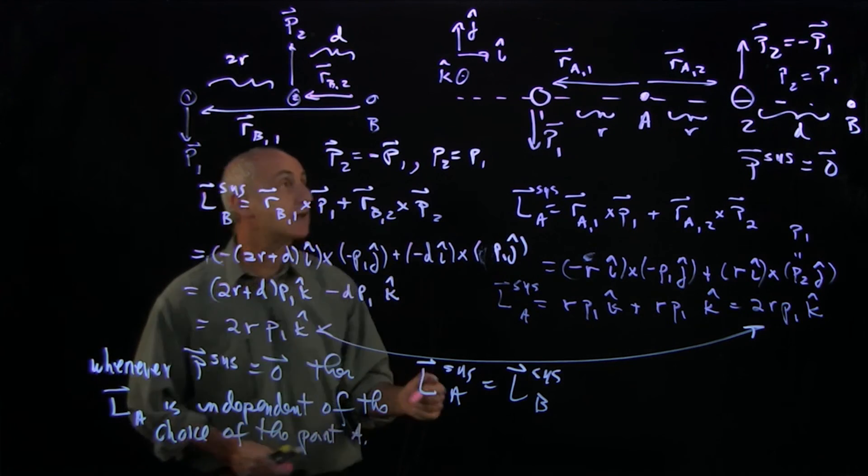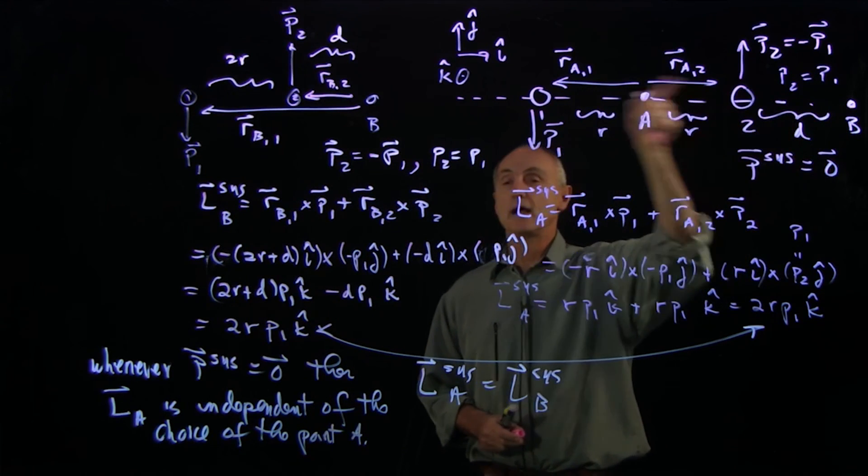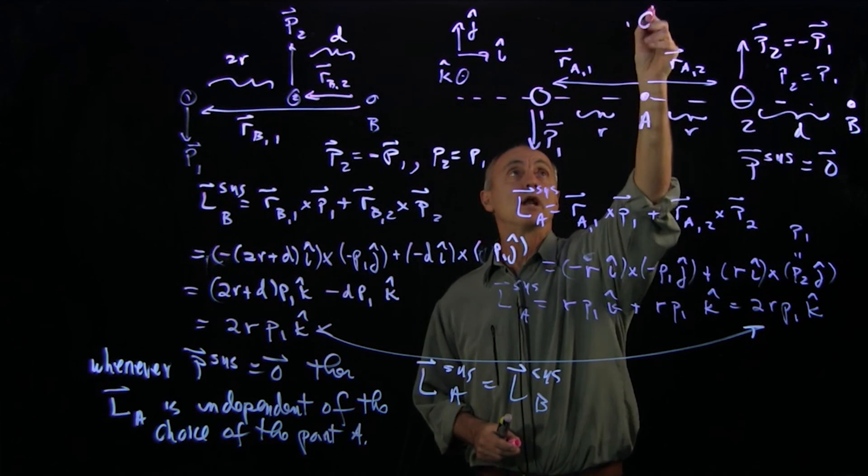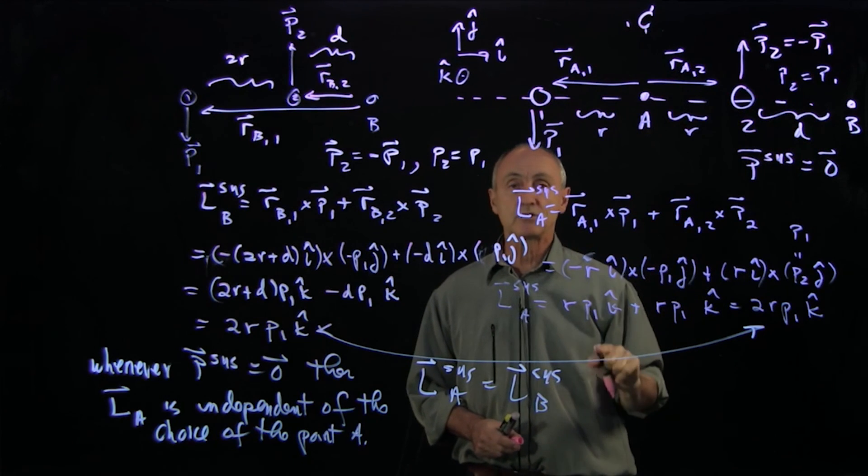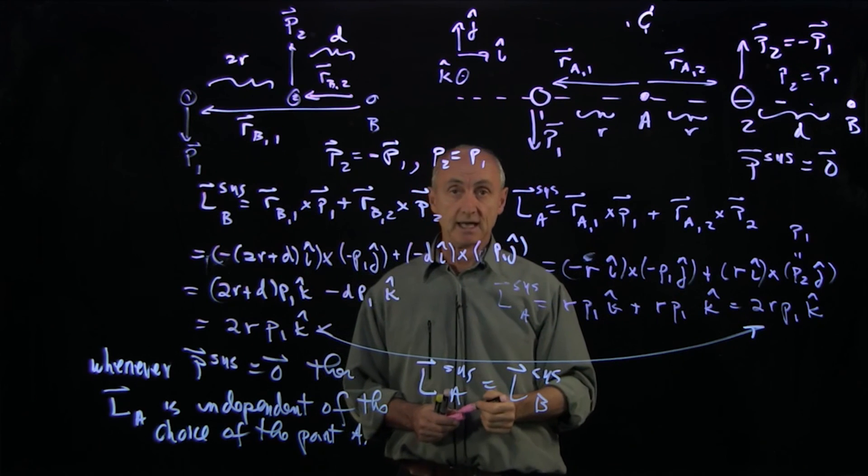So coming back to our example, no matter where I picked our points, A and B, any point I could pick anywhere I want, I could pick a point C up there. I make this cross product calculation, I would get exactly the same answer, 2R P1 k hat.